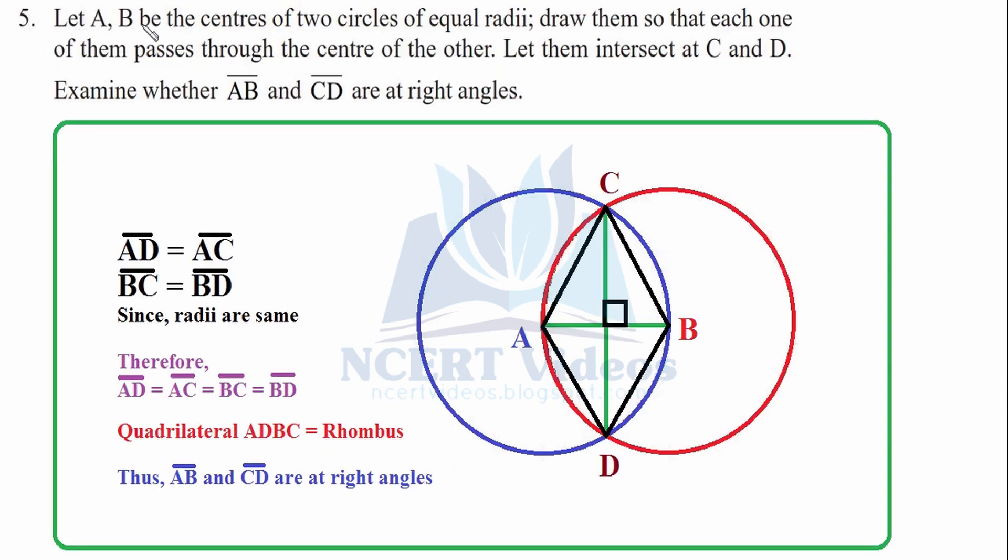Let A, B be the center of two circles of equal radii. These are the circles having equal radii. That is the distance of both radius is equal. Draw them so that each one of them passes through the center of the other. We have to draw them in such a way that each one cuts through the center of the other. This one will cut center of blue one. Same happens with the other. Let them intersect at C and D. Whenever such things will happen, they will intersect at two points, C and D as stated in the question.